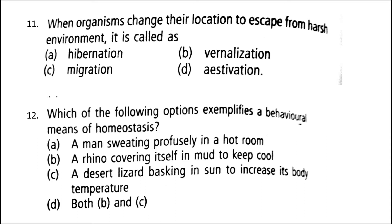Next: which of the following options exemplifies a behavioral means of homeostasis? The correct answer is option D — both A, B, and C: a man sweating profusely in a hot room, and a rhino covering itself in mud to keep cool. Some organisms show behavioral adaptation to cope with variations in their environment. A rhino covering itself in mud and desert lizards basking in the sun are examples of behavioral means of homeostasis. Desert lizards lack the physiological ability to deal with high temperature, so they keep body temperature fairly constant by behavioral means — basking to absorb heat when body temperature drops, moving into shade when surrounding temperature increases, or burrowing into soil to escape from too much heat.